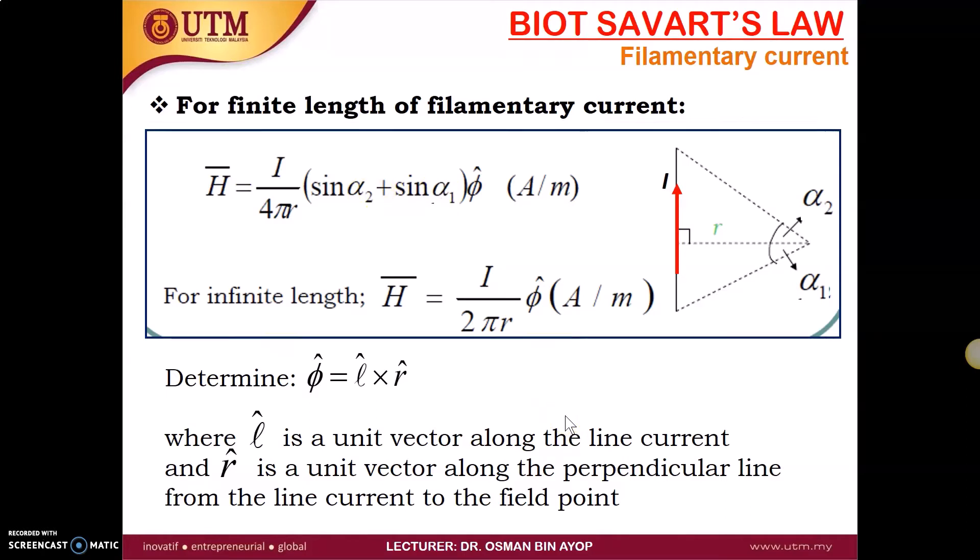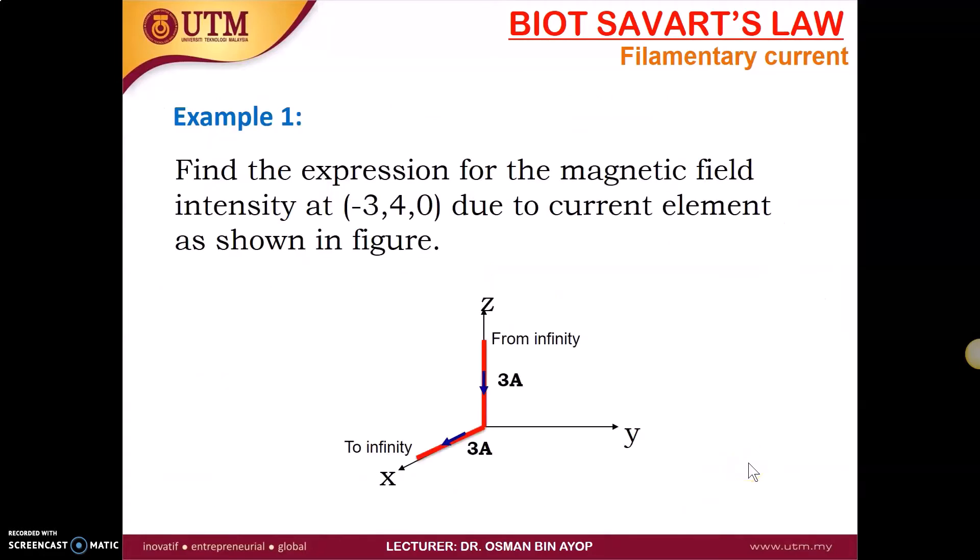Alright, hopefully you are using the correct label. For example, alpha 1 here is from negative Z to positive Z. So this is alpha 1 and this is alpha 2. So our reference is our normal line. So to that mean, what is the direction of phi? The phi is basically equal to the direction of our DL or the current flow and also our L here. R is not L, it's R here.